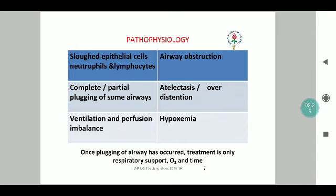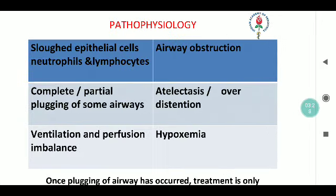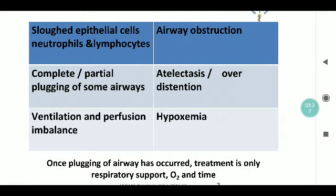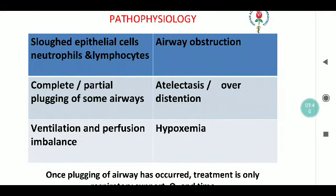The pathophysiology of bronchiolitis comprises three aspects: airway obstruction, atelectasis or overdistension, and hypoxemia. Airway obstruction is mainly due to sloughed epithelial cells and accumulation of neutrophils and lymphocytes within this slough, resulting in airway obstruction. Because there is partial plugging of some airways, there is overdistension or overinflation at the terminal part. As a result, hypoxemia occurs due to a ventilation-perfusion imbalance.